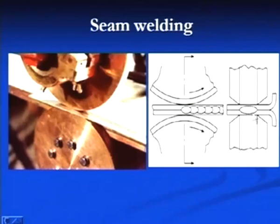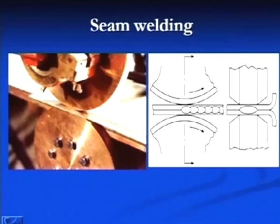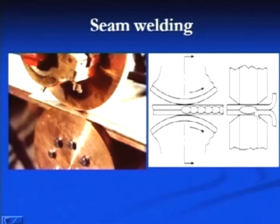When the plates to be joined are passed through the rollers, a series of nuggets are formed at the interface. The cross-section shows one roller on each side with the nugget formed at the interface between the two plates.